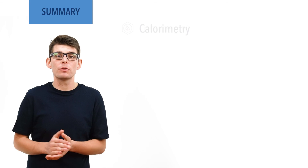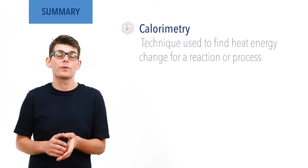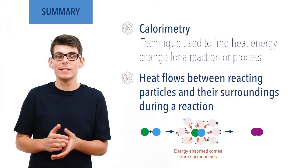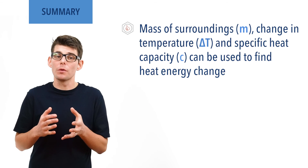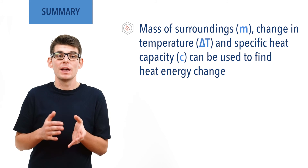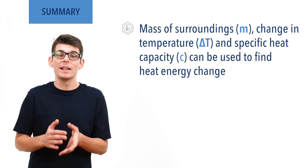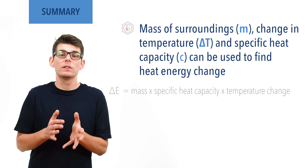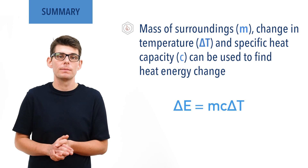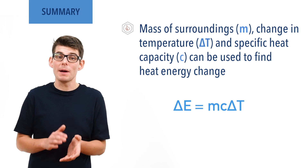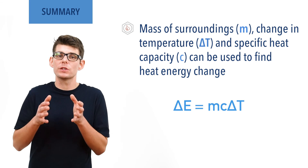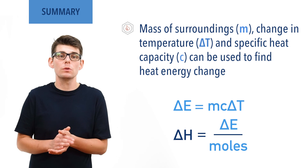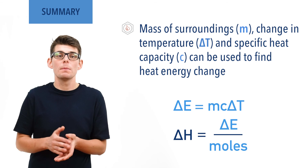To summarise: calorimetry is an experimental technique used to find heat energy change for a reaction or process. During a reaction, energy is transferred between the reacting particles and the surroundings in the form of heat. By measuring the change in temperature of a reaction's surroundings and using the mass of surroundings and its specific heat capacity, this amount of energy transfer can be found and the energy change of the reaction determined. Change in energy equals mass times specific heat capacity times change in temperature — delta E equals MC delta T. It is essential to remember all of these values — mass, specific heat capacity, and temperature — all refer to the surroundings. Enthalpy change can be found by dividing the heat energy change by the moles of reactants used.